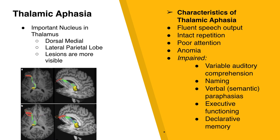Subcortical thalamic aphasia presents differently than non-thalamic aphasia. Aphasia due to thalamic lesions is more visible on imaging, resulting in it being better understood and documented. The thalamus is the relay station for sensory information. There are two important nuclei in the thalamus: the dorsal medial and the lateral parietal. The dorsal medial is the relay station from the frontal lobe to the thalamus and back — essentially how the frontal lobe communicates with itself. This is commonly why individuals with thalamic aphasia present with poor attention skills, as executive functions rely on the frontal lobe. Thalamic aphasia is thought to be due to a lesion in the white fibers connecting the thalamus to the prefrontal cortex.